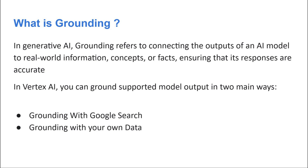When we question our Gemini model without grounding, it gives answers based only on the data it was trained on. It has no information about yesterday's match result or the recent US election because it was trained on a pre-existing dataset, possibly from two months or a year back. Grounding means we provide an external data source so the model gets real-world context and updates its answers accordingly.